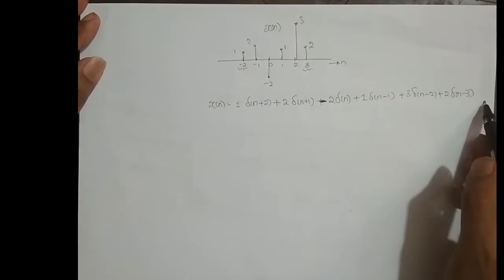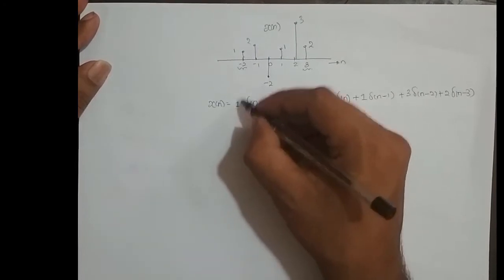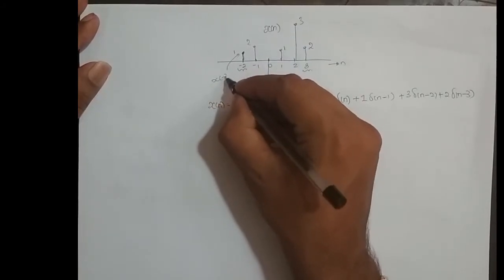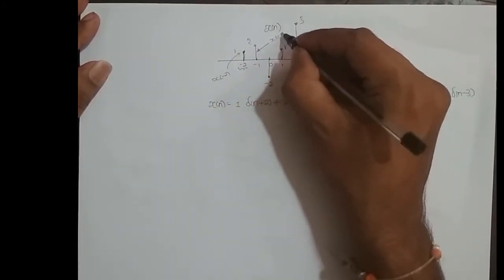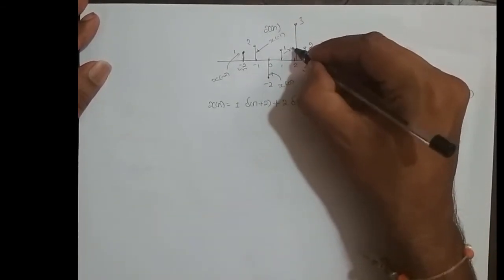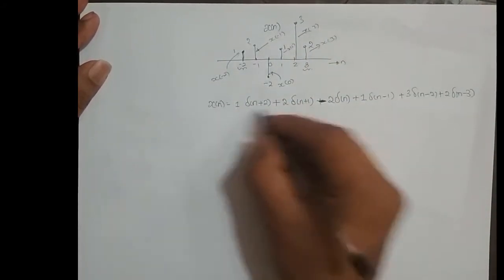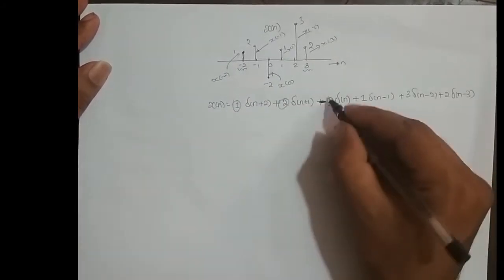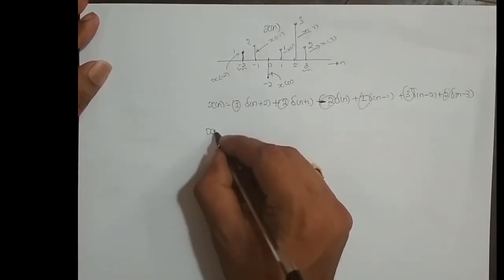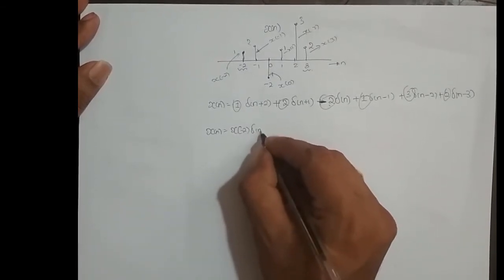This is how we represent a discrete-time signal in terms of the unit impulse function. Now, how do we address each sample? This sample is x of minus 2, this one is x of minus 1, this is x of 0, this is x of 1, this is x of 2, and this is x of 3. So instead of writing the numeric sample values — 1, 2, minus 2, 1, 3, and 2 — we write their corresponding index. For example, this can be written as x of minus 2 times delta of n plus 2.